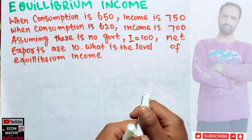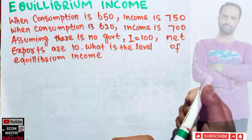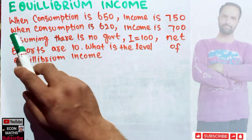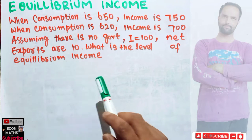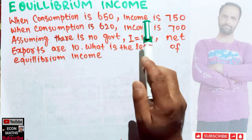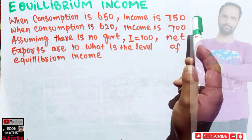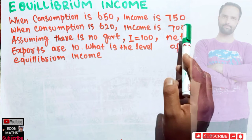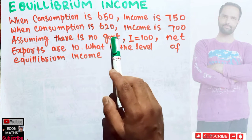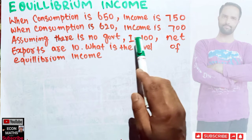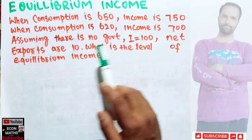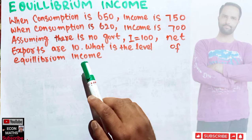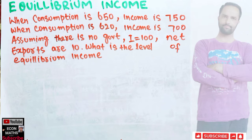In this video we will solve a problem on how to find the equilibrium level of income. The question is: when consumption is 650, income is 750; when consumption is 620, income is 700. Assuming there is no government, autonomous investment is 100, and net exports are 10. What is the equilibrium level of income?